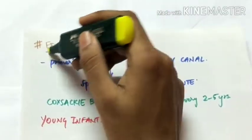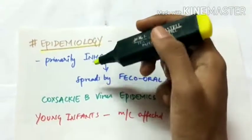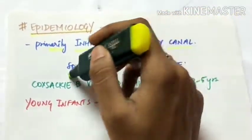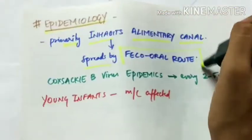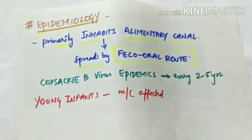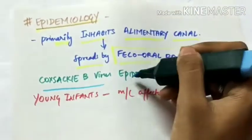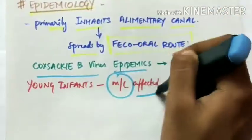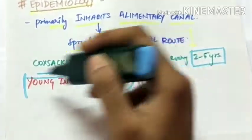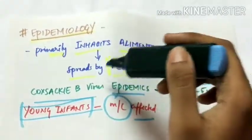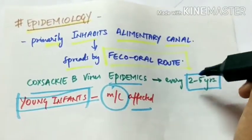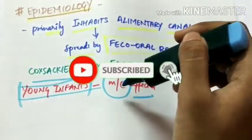Regarding epidemiology, Coxsackie viruses primarily inhabit the alimentary canal (gastrointestinal tract) and spread by the feco-oral route through ingestion. Coxsackie B viruses cause epidemics every two to five years, and young infants are the most commonly affected.